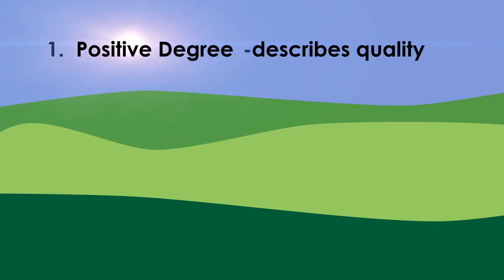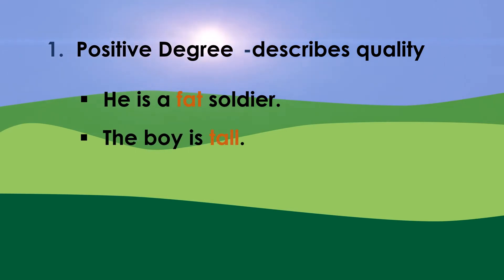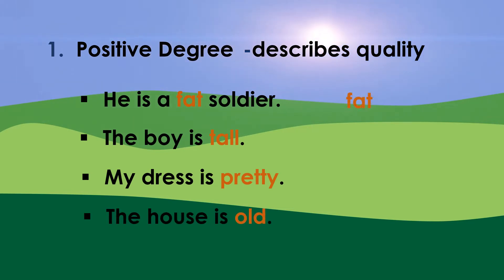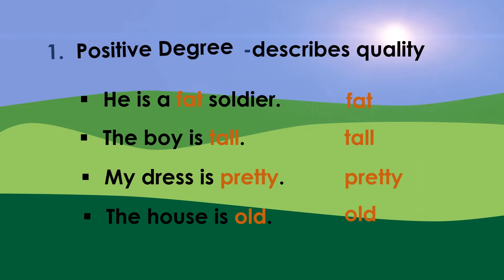Positive degree describes a quality. For example: he is a fat soldier, the boy is tall, my dress is pretty, the house is old. Fat, tall, pretty, old — these are adjectives in the positive degree.